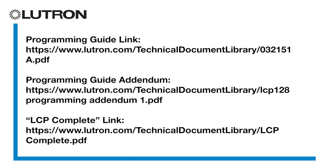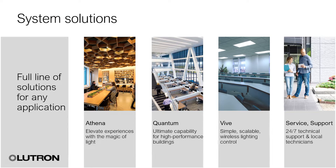The LCP and XPS systems we just talked about are just one of several commercial systems offered by Lutron. Additional information on the LCP and XPS systems can be found at the links on screen. Lutron offers several other lighting control systems for new and existing installations.